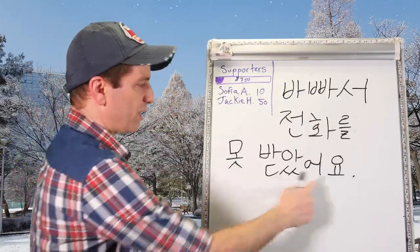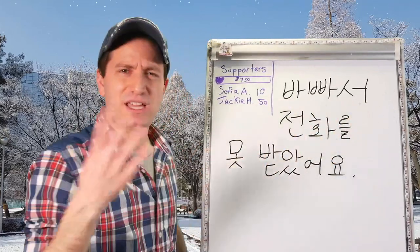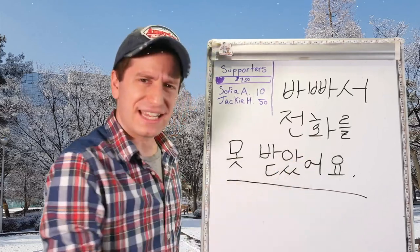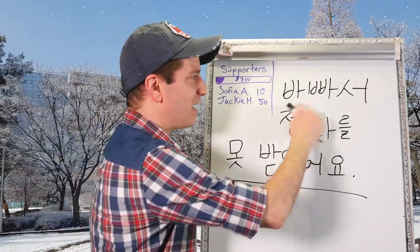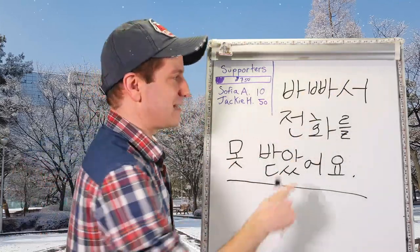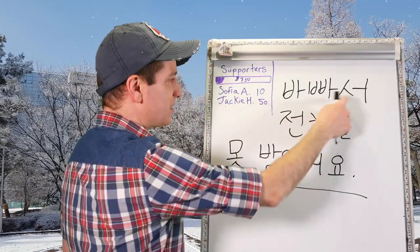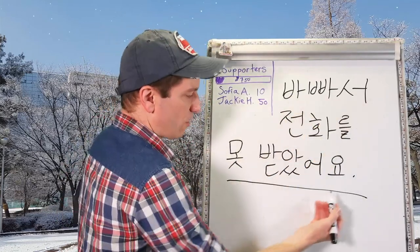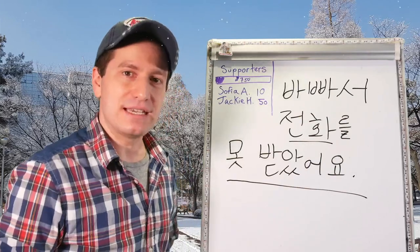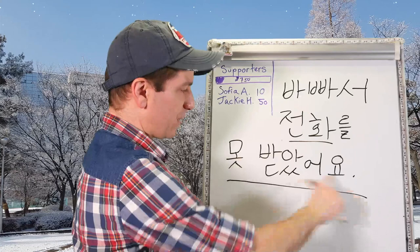바빠서 전화를 못 받았어요. Because I am busy — 바빠서 — the last part of the sentence, 전화를 못 받았어요, I couldn't get the phone — past tense. Notice again, there is no tense on the 서 form. It's not 바빴어서, just 바빠서. I couldn't get the phone because I was busy.